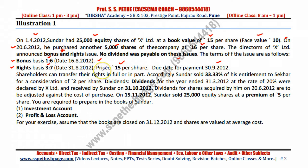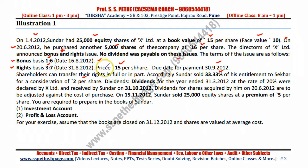If you get a right share, you get the right to purchase additional shares. This right you can sell. Further, it is given that the shareholder can transfer these rights. Accordingly, Sundar had sold 33.33% of his right share entitlement at the rate of 2 rupees per share.